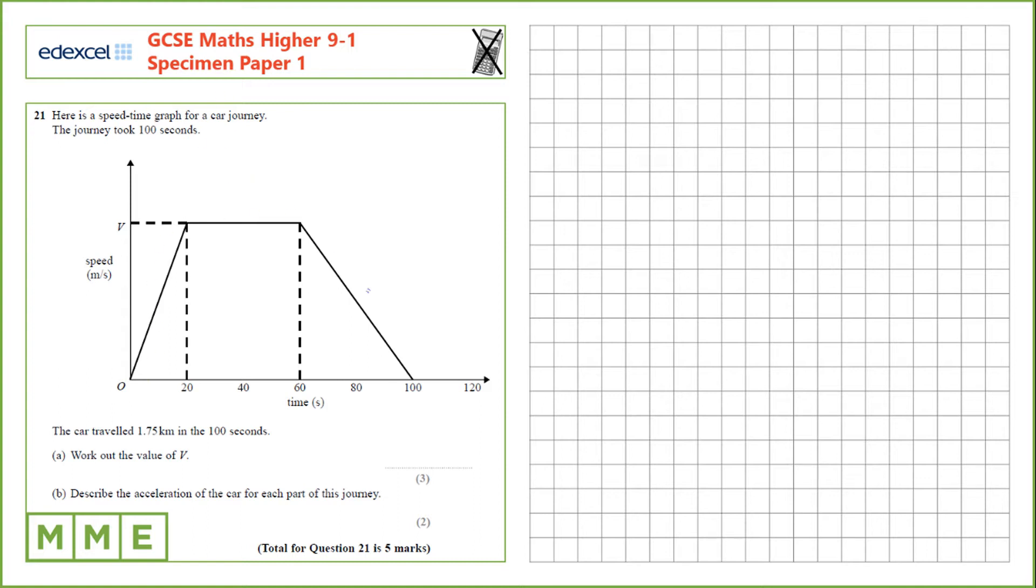On a speed time graph, the distance travelled is the area under the graph. So we need to calculate the area under the graph, set it equal to 1.75, and we can work out the value of V.